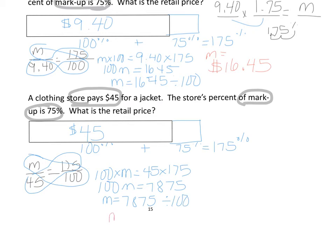We get that you as the customer will spend $78.75 when the store only spent $45 on the exact same jacket. For the equation, you move the decimal two spots to the left and you get 1.75 on that $45 jacket that the store bought. You want to know the retail price because they marked it up 75%, so you multiply 1.75 by 45.